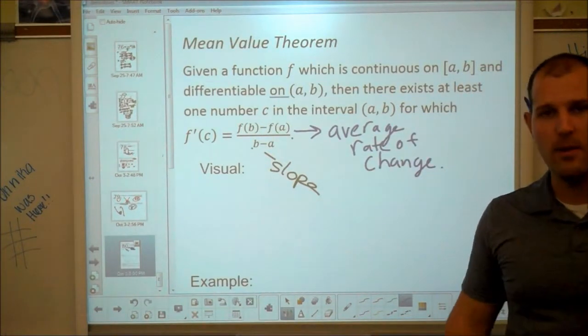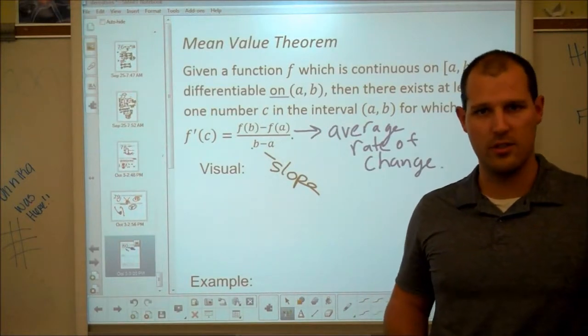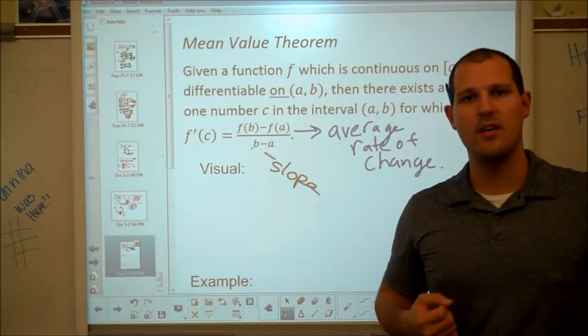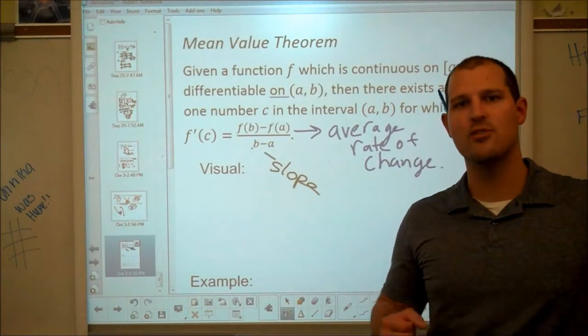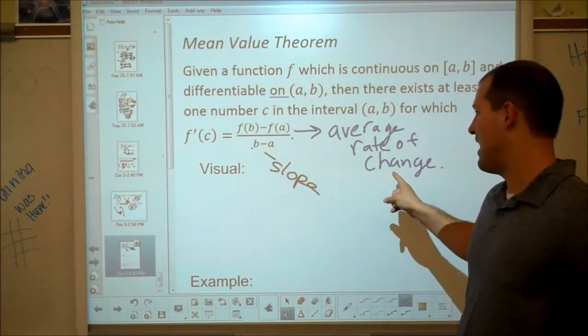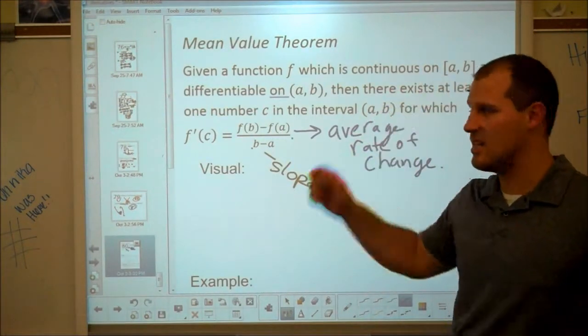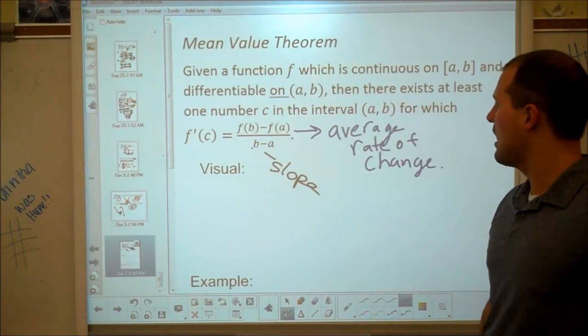Attention AP testers! This is one way that AP will notify you that a question is using the mean value theorem. If you see the phrase average rate of change, 99% of the time, if not always, that's going to be a mean value theorem question. So you may want to jot that down and kind of stick that in the back of your brain. There's another thing I want to point out.